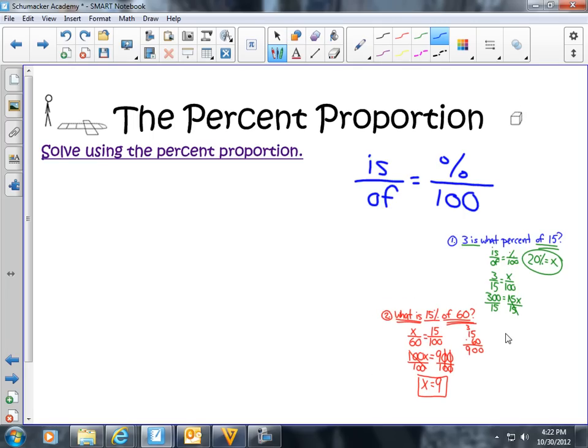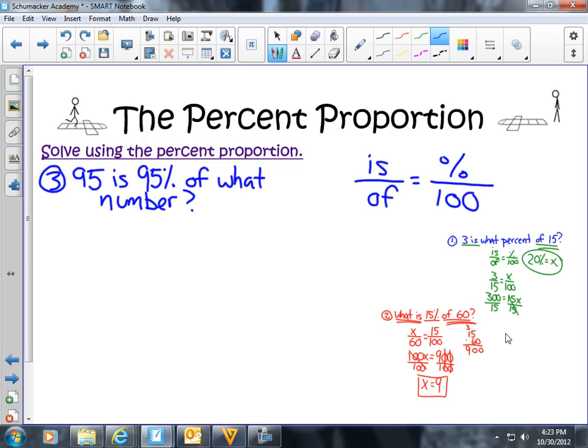On our last percent problem, we've done one where we have been given the is and the of. We've had a problem where we were given the percent and the of. So let's try to find one where we're trying to find the of. How about we do this: 95 is 95 percent of what number?